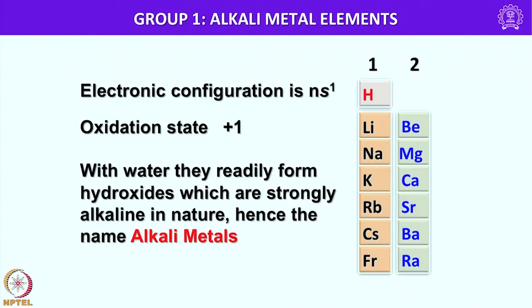The important feature of alkali metals is the group oxidation state is plus 1, and these metals readily react with water to form hydroxides which are strongly alkaline in nature, and hence the name alkali metals. Sodium and potassium are abundant whereas lithium, rubidium and cesium are less abundant, and francium is highly radioactive. The longest lived isotope of francium is 223-francium, which has a half life of about 21 minutes.